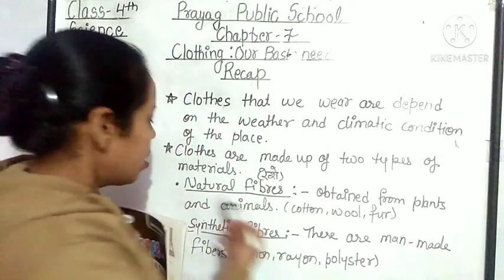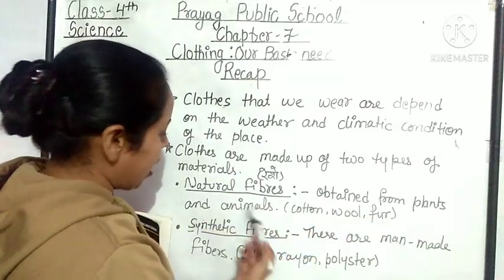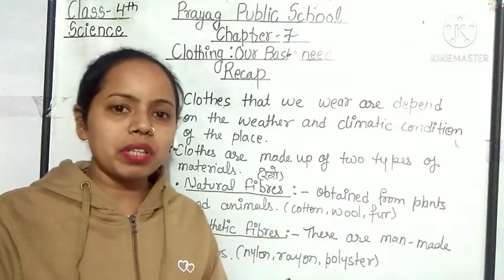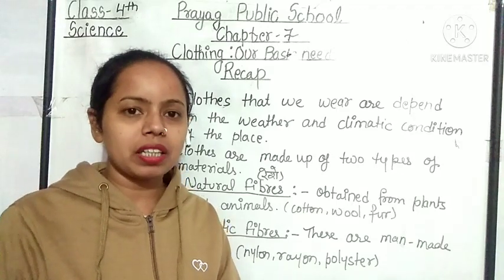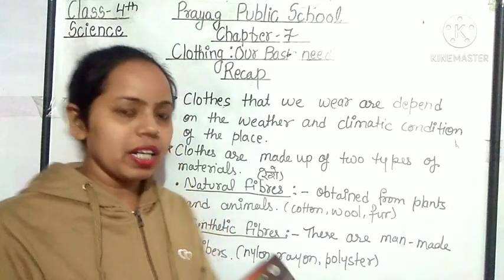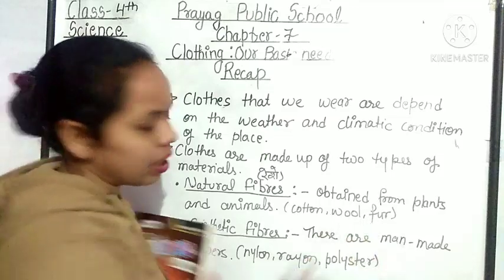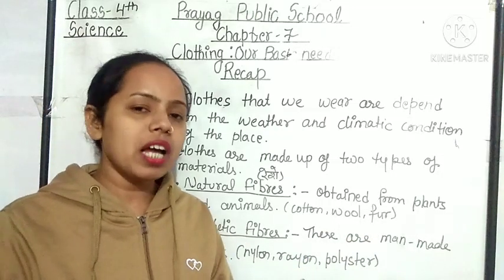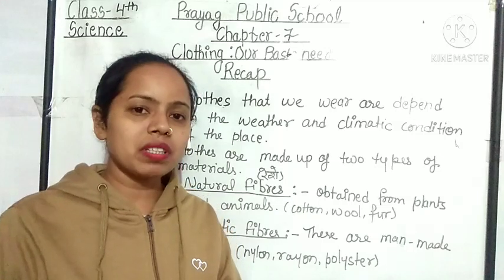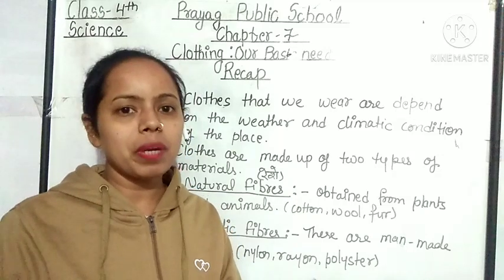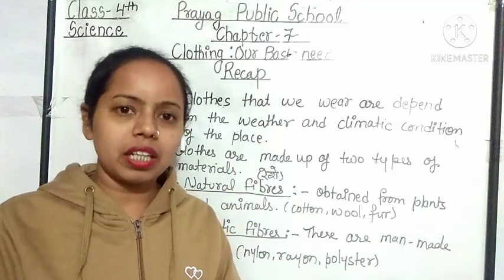Natural fibers are obtained from plants and animals. ये जो natural fibers होते हैं, ये plants या animals से obtain किये जाते हैं। इसके कुछ examples हैं — cotton, wool, fur, silk। ये कुछ natural fibers के examples हैं। इन fibers से बने जो भी कपड़े होते हैं, उन्हें हम natural fabric कहते हैं।